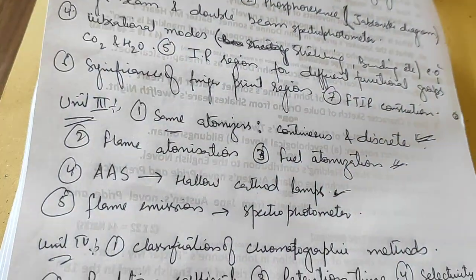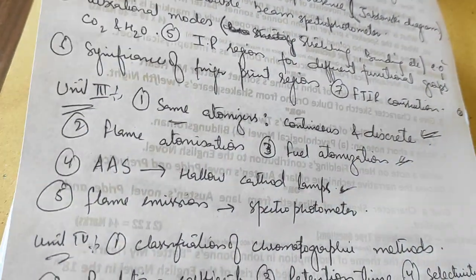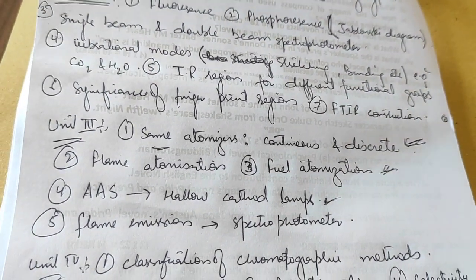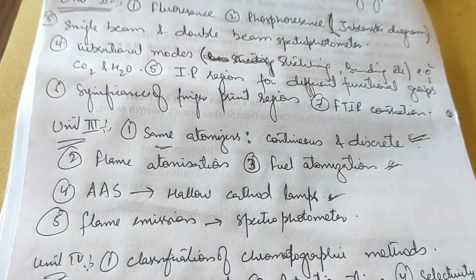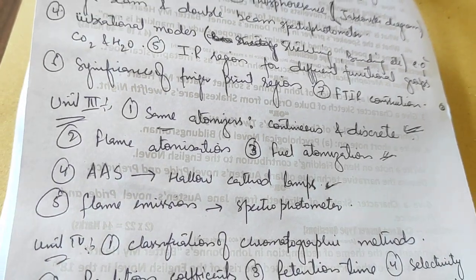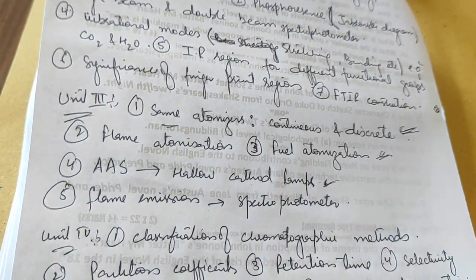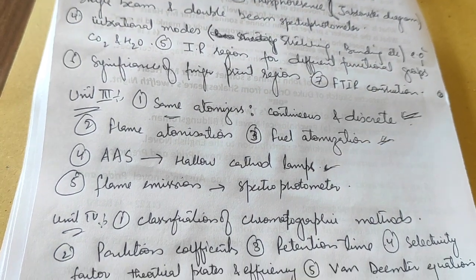In unit third, prepare atomizers, which are continuous as well as discrete, and flame atomization and fuel atomization. In AAS (atomic absorption spectrophotometer), lamps are important—especially hollow cathode lamps. For flame emission, you can go for spectrophotometer construction.